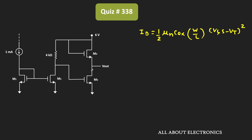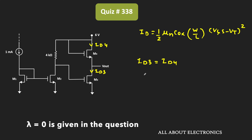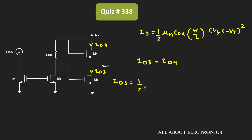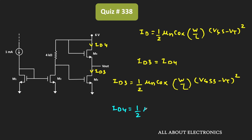Let the current through MOSFET M3 be ID3 and through MOSFET M4 be ID4. Since both are in series, ID3 = ID4. Since both operate in saturation, for M3: ID3 = (1/2) × μn × Cox × (W/L) × (VGS3 − Vt)². For M4: ID4 = (1/2) × μn × Cox × (W/L) × (VGS4 − Vt)².